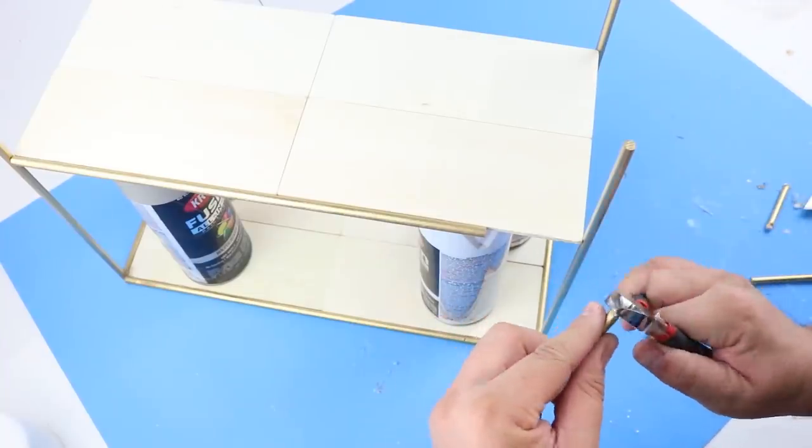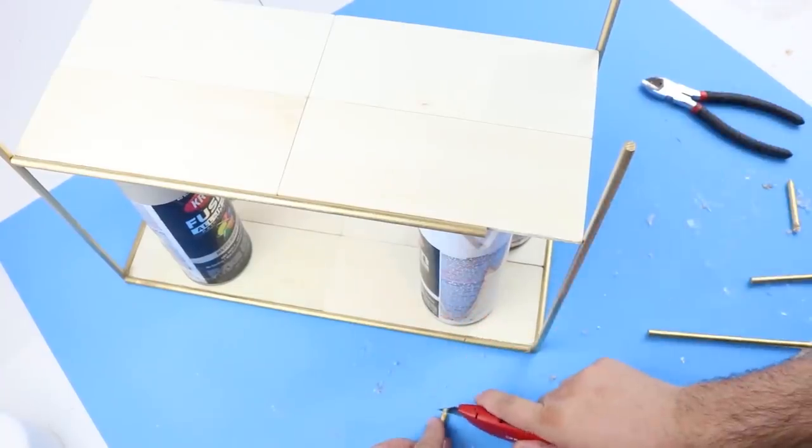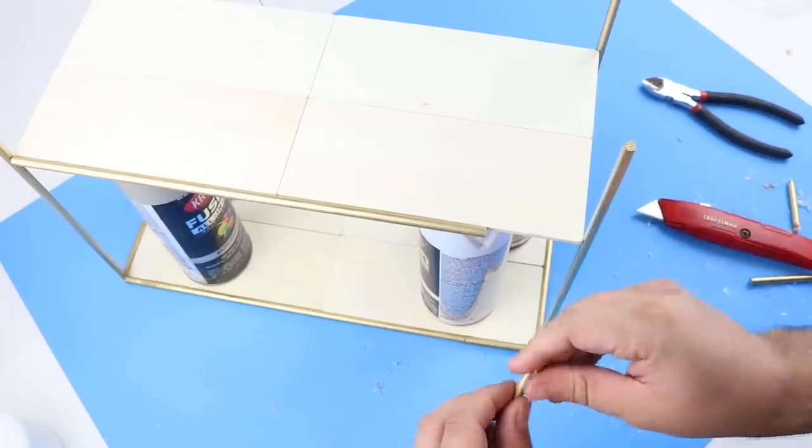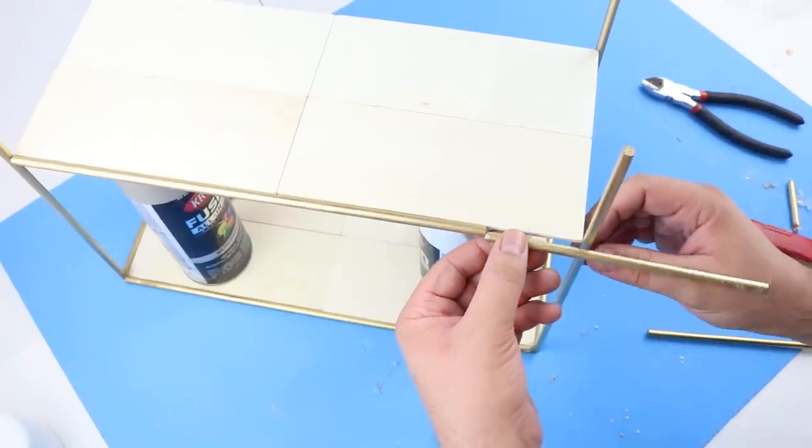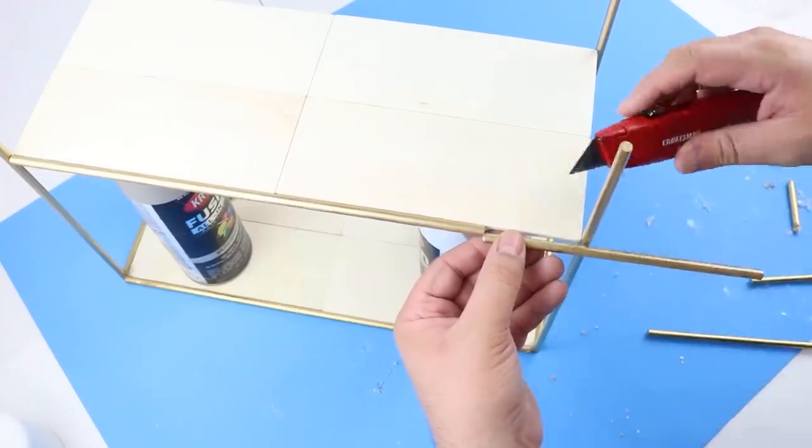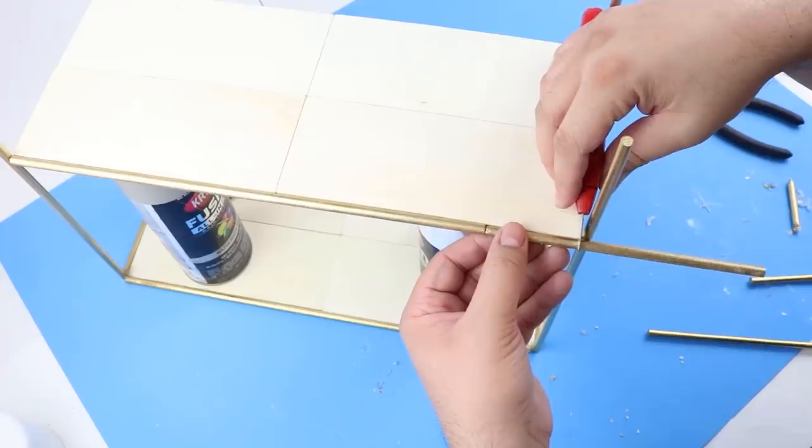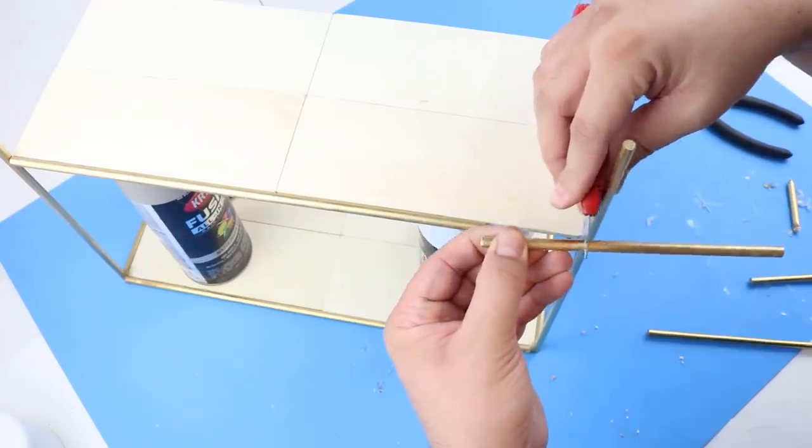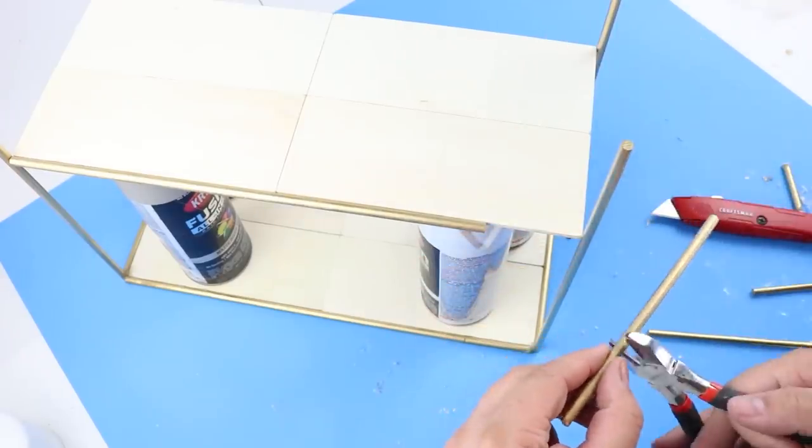And then once we have that laying flat there, we can move on to adding the frame around this shelf and I'm just doing the exact same thing as I did before. I'm just starting on one corner and I'm working all the way around until I meet up with that and just measuring and cutting as I need to while I'm moving around this.